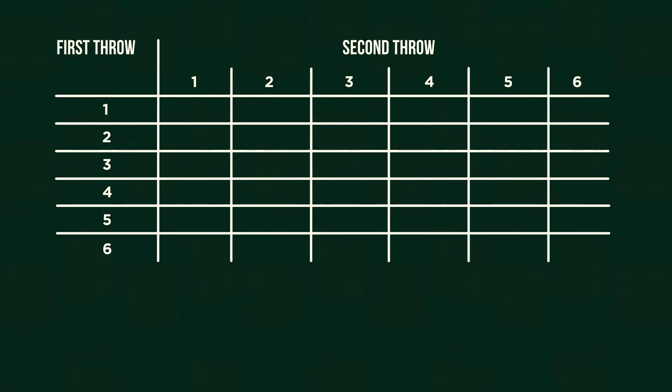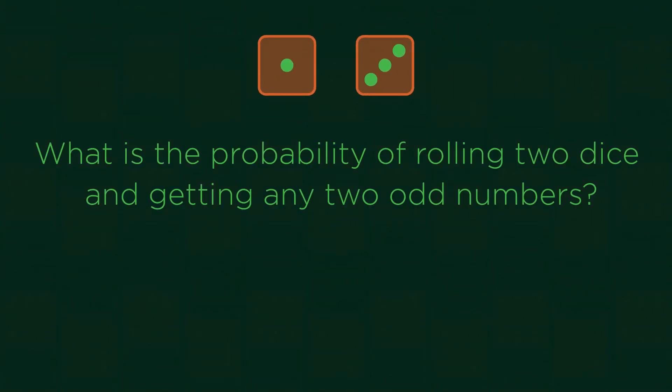Let's have a look at an example. What's the probability of rolling two dice and getting any two odd numbers? Pause the video here if you would like to have a go at working it out yourself.